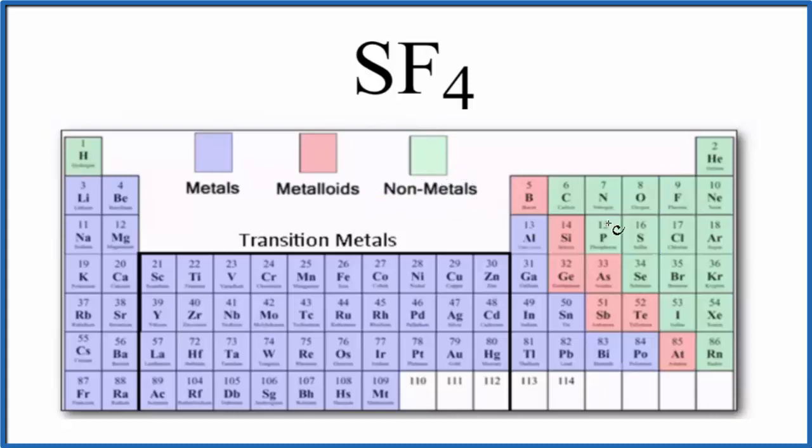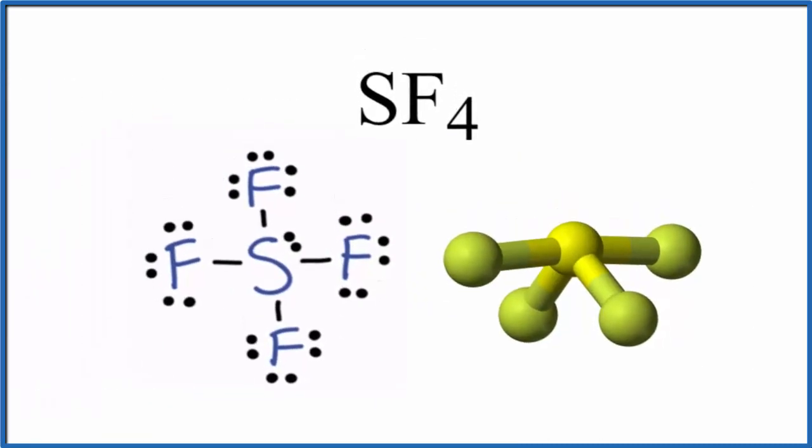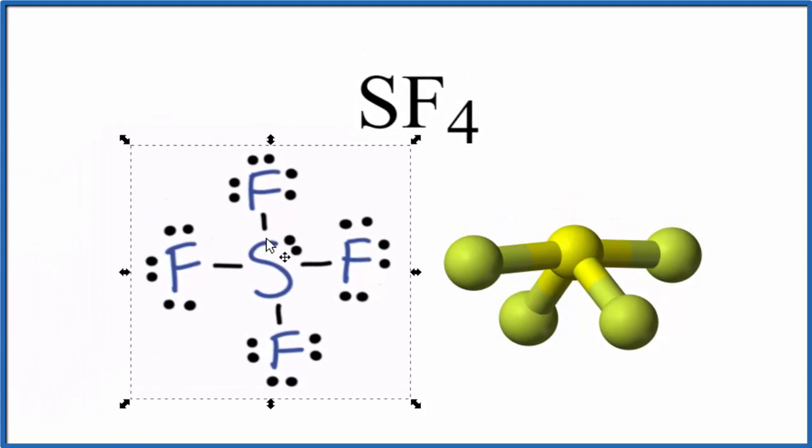If we look at the Lewis structure for SF4, we can see that we have these bonds here. These lines represent the bonds between the sulfur and the fluorine atoms. So these are single bonds and each one represents a pair of electrons.